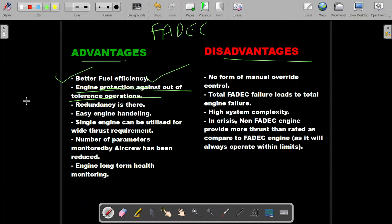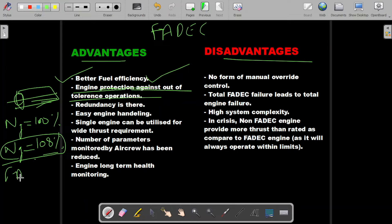Second is engine protection against out of tolerance operations. Let's say one engine is operating and the gas generator RPM is 100%. There are interlocks fitted. If the gas generator RPM is going beyond, let's say 108%, engine should shut down. These kinds of programs are already implemented into FADEC. If engine is going above 108%, FADEC will shut down the engine.